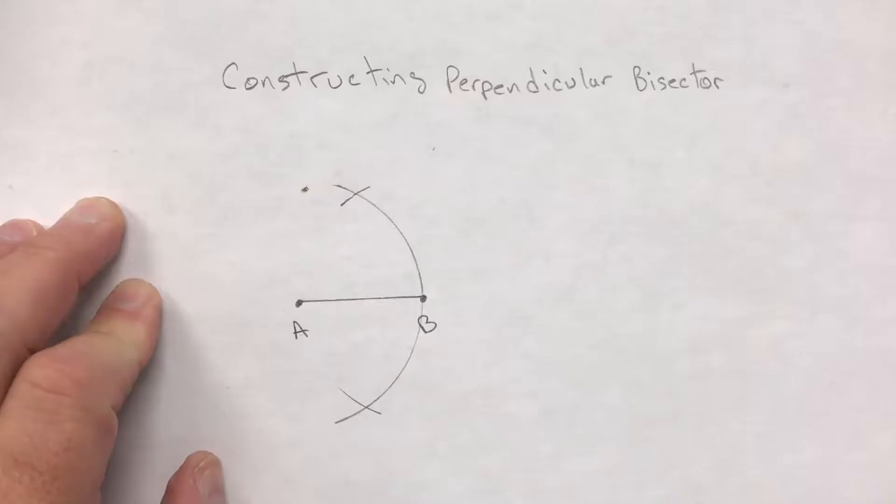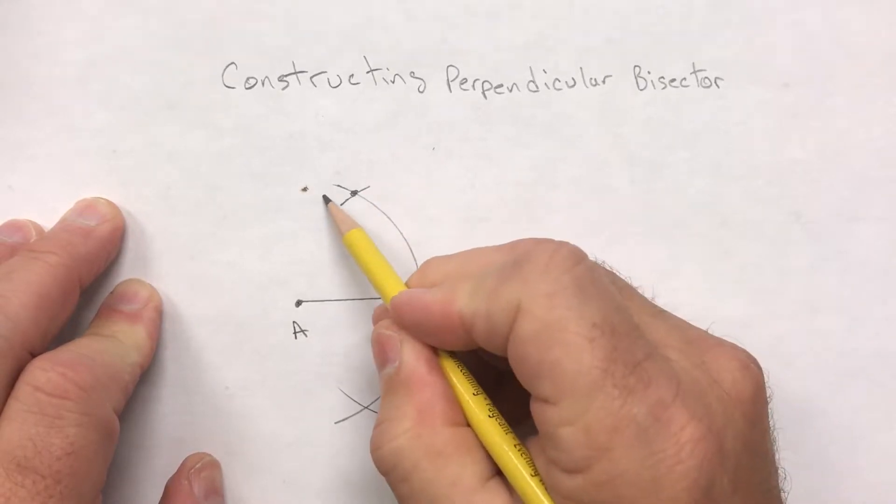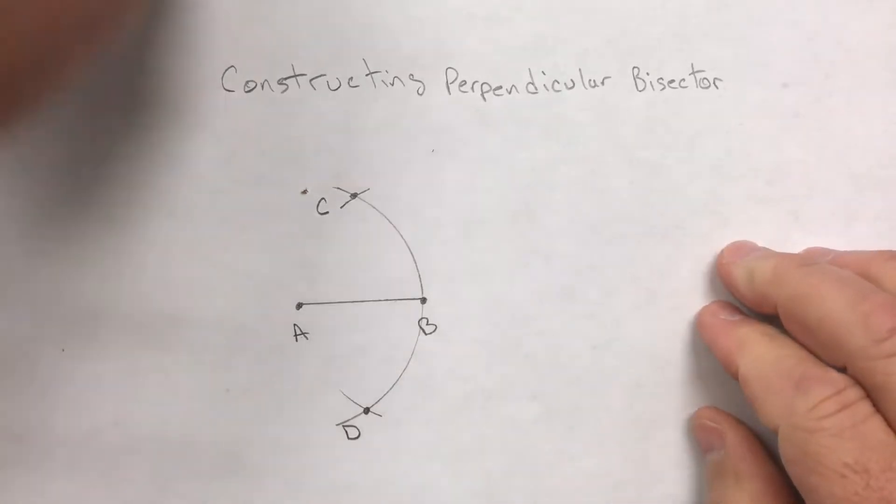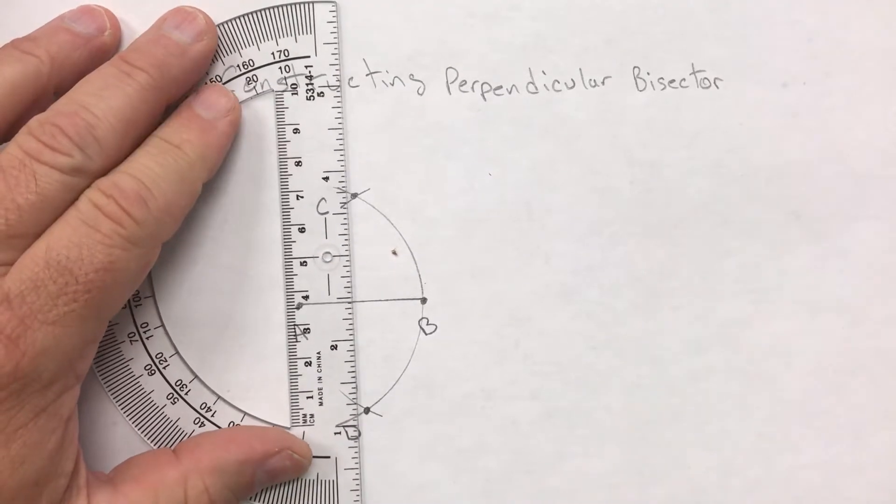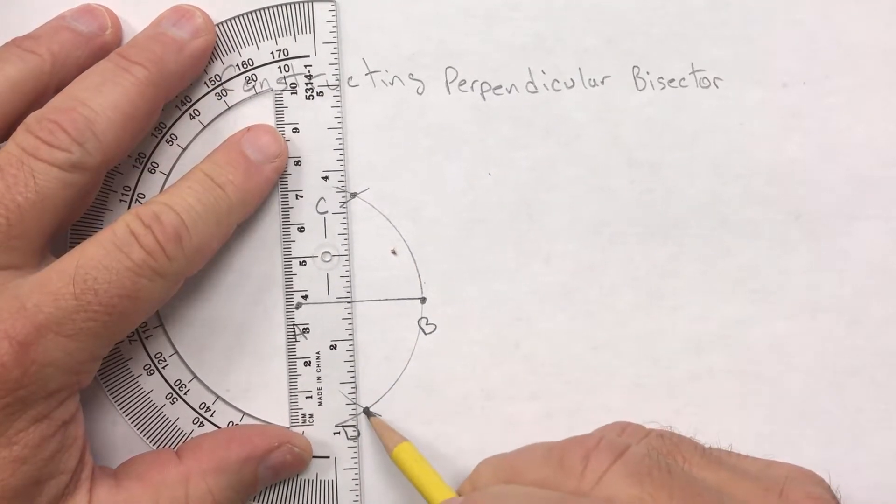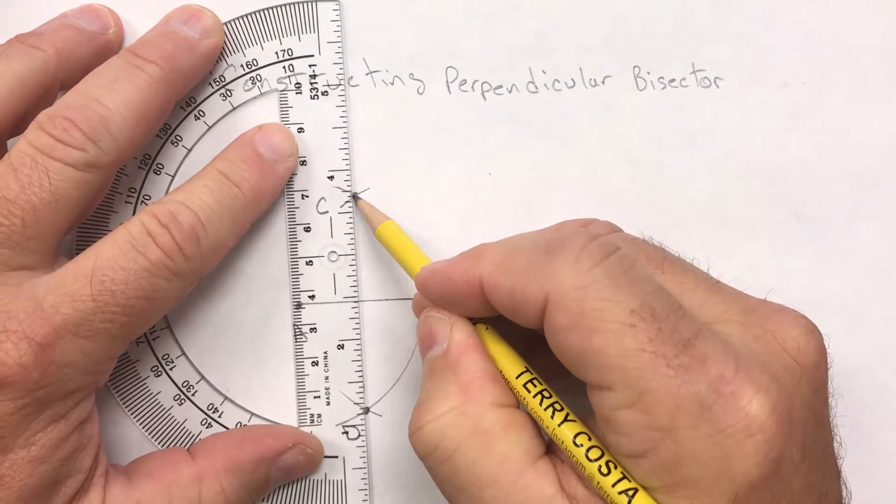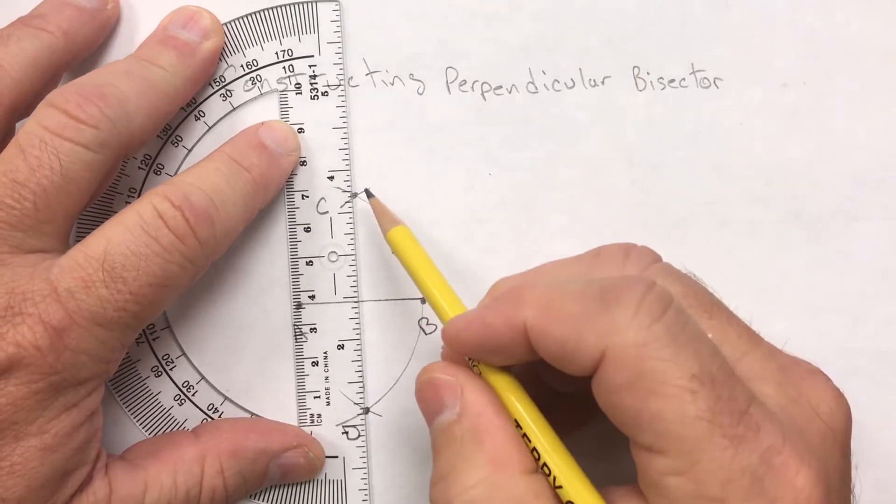Label these points of intersection C and D. Get your protractor and line up with C and D. Push your straight edge up against the pencil and draw the line through CD.